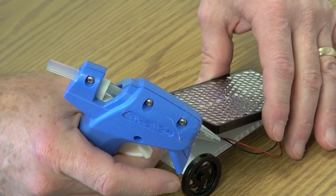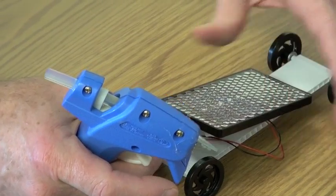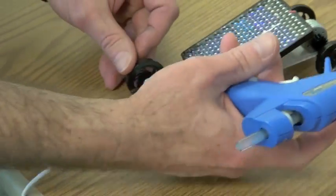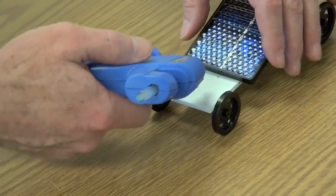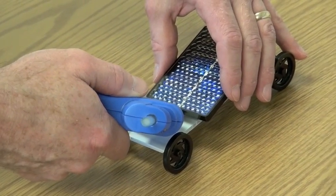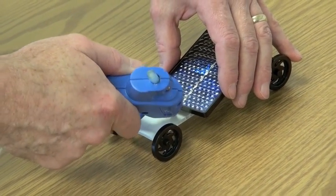Securing that in place just takes a second with a glue gun. Turning it around, lifting up the motor just a little bit, put a little dab between there and the car body.